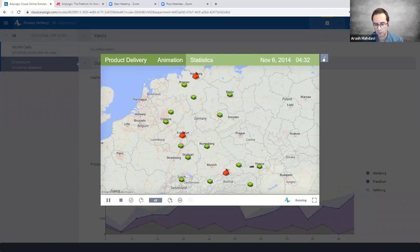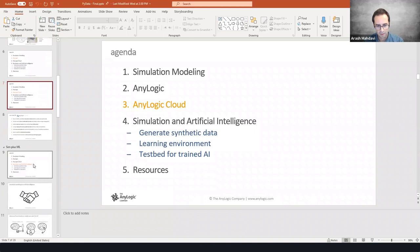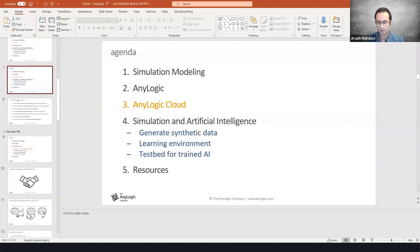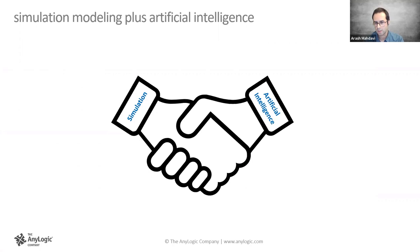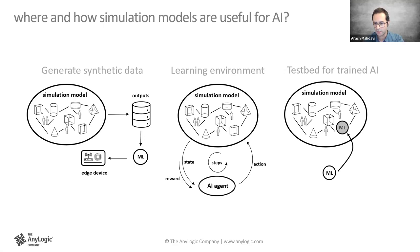Now let's move to the main topic — when simulation and AI come together for applied AI. We identified three categories of use cases: generating synthetic data, using simulation as a learning environment for reinforcement learning, and using simulation as a test bed for trained AI.